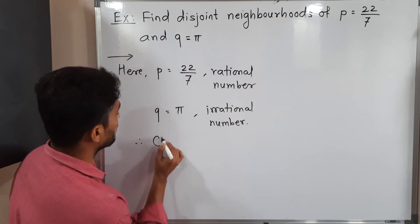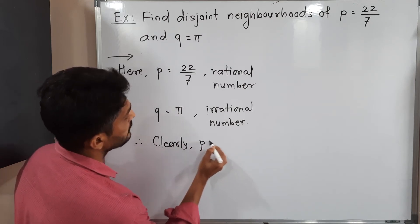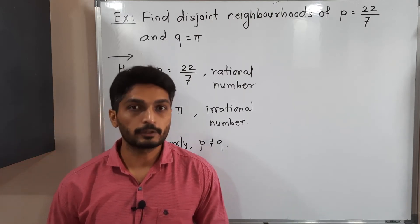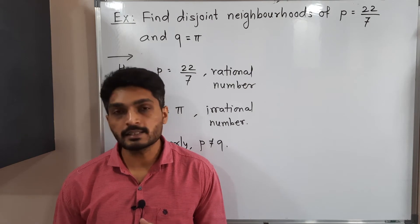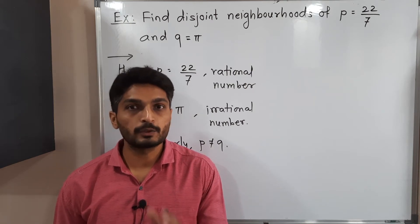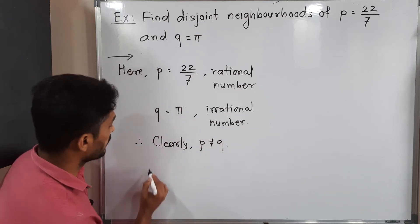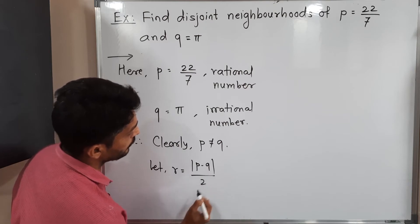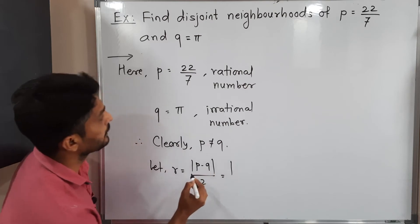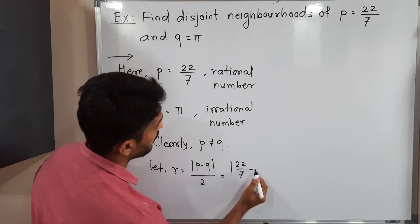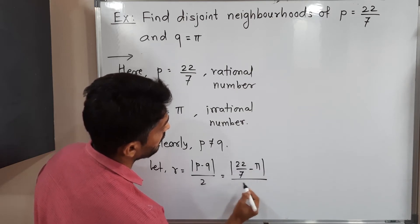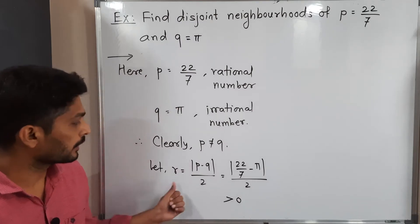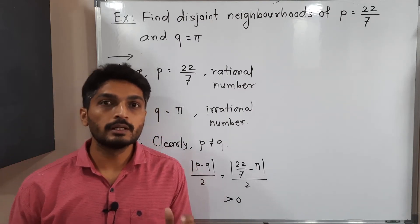Therefore, clearly P ≠ Q, so we can definitely find disjoint neighborhoods of P and Q. The technique is the same: let R = |P minus Q| divided by 2. So R = |22/7 minus π| divided by 2, which is clearly greater than 0. This is the radius we are going to use for the neighborhoods.